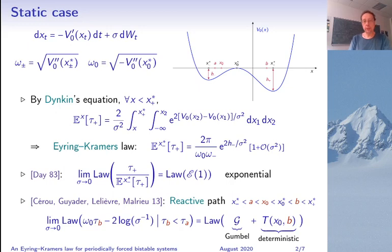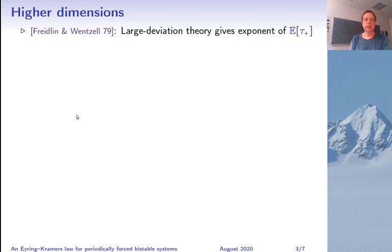Now our system is not one-dimensional, so what is known in higher dimensions? You can always obtain the exponent of the expected transition time using large deviations. Though the formula you obtain is not always very explicit, so this exponent is given as the solution of some variational problem.